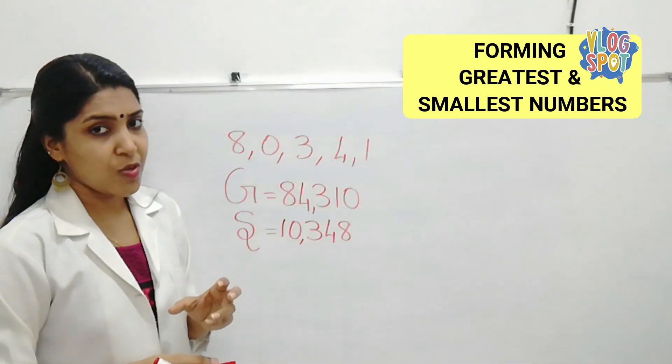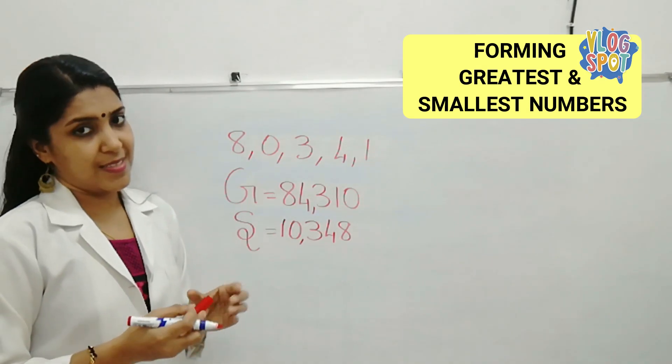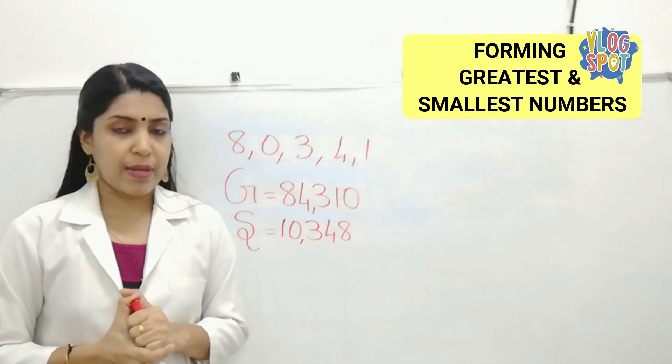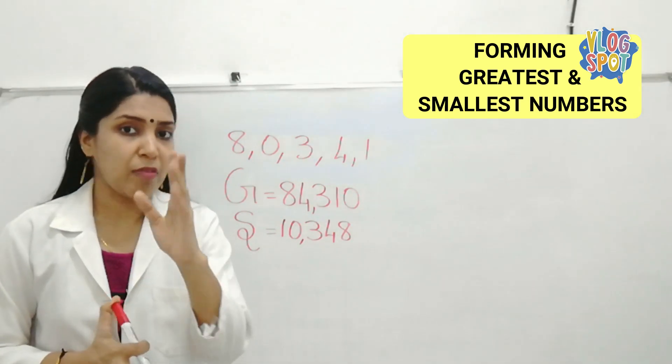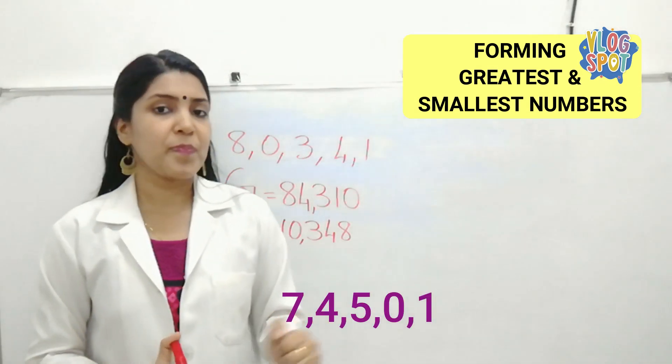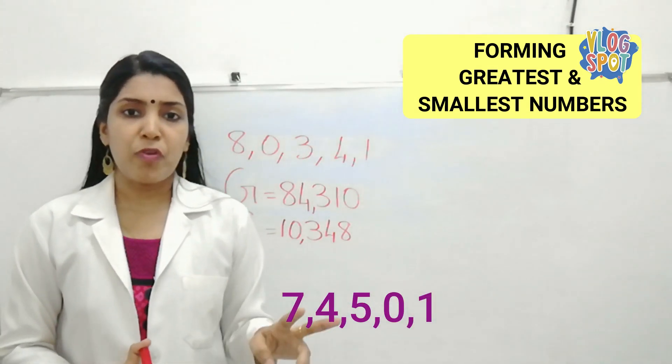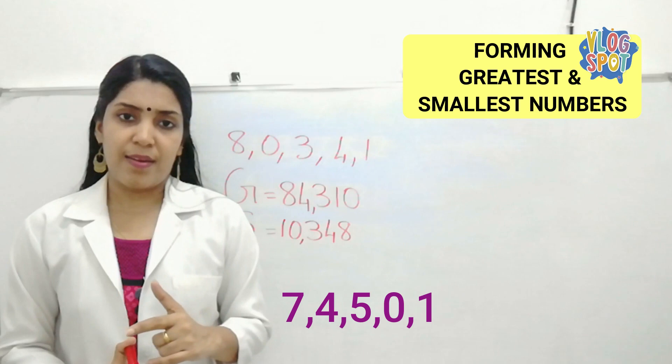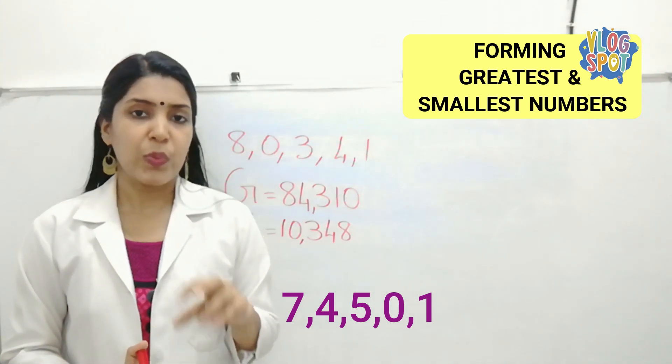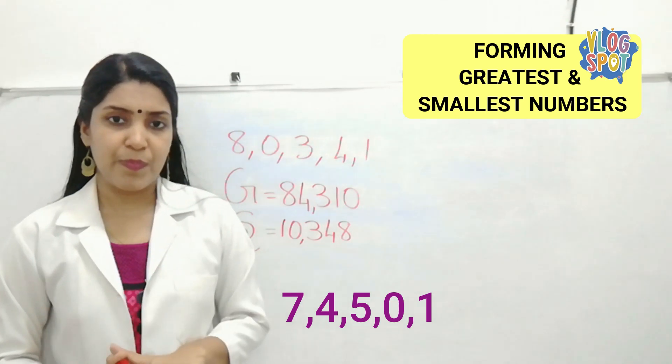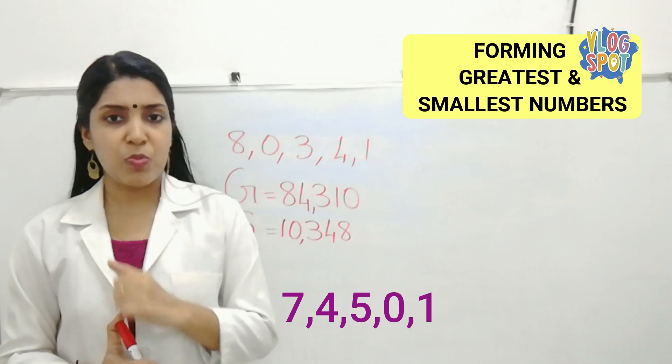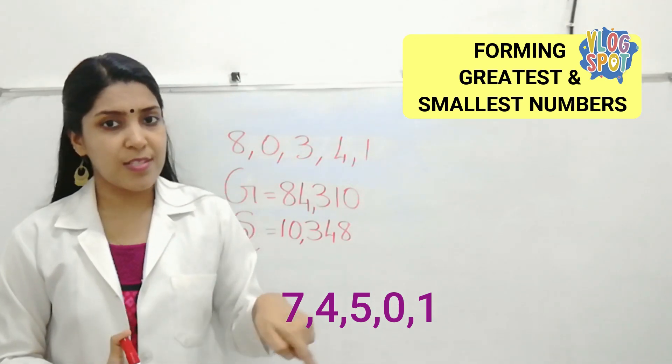I hope you understood. So, let's start with another example. I will give you one number. You have to do. You have to work out. So, here is the number. 7, 4, 5, 1. Take a paper. Please form the greatest and smallest possible number using the digits.